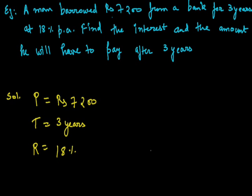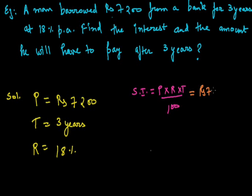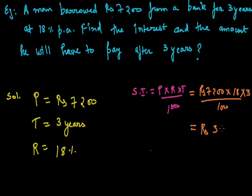In this question we have to find not only the interest but also the amount. We know how to calculate simple interest: SI is equal to P into R into T upon 100. Substituting the values, we have P as Rs. 7200, rate is 18%, and time period is 3 years, all upon 100. If we calculate it, it comes out to be Rs. 3888. This is the simple interest, that is, the interest.